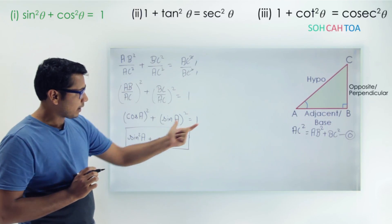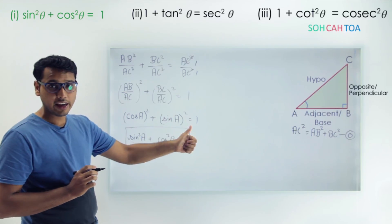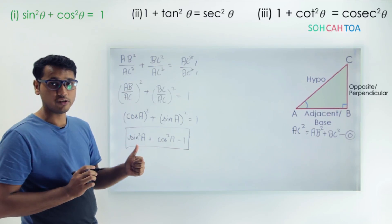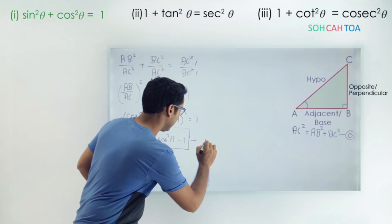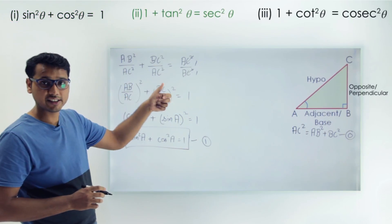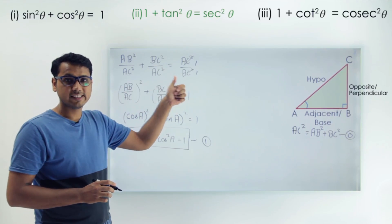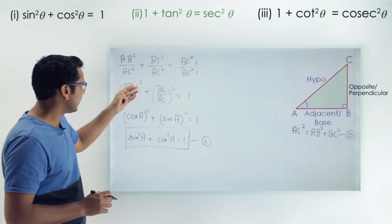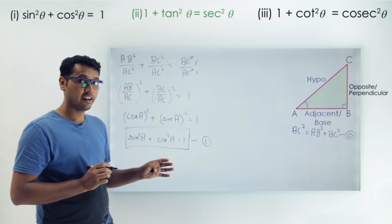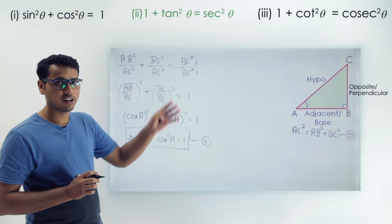Since the Pythagorean theorem is true for each and every value of A, this equation is also true for each and every value of A. So we have proved the first identity. Now let's move on to our next equation, which is 1 plus tan square theta equals to sec square theta. For this, instead of dividing by AC square, we will divide equation 0 by AB square to get the second identity.